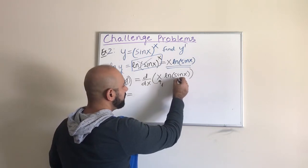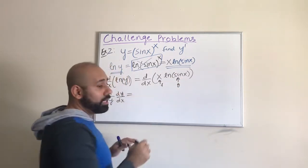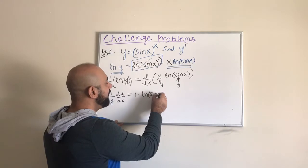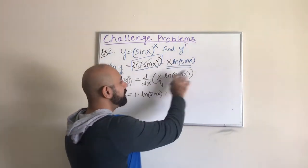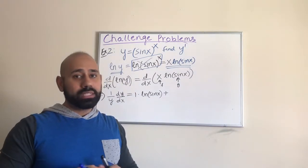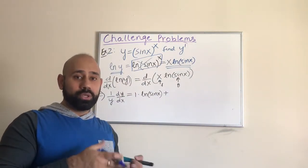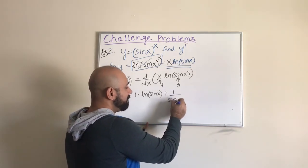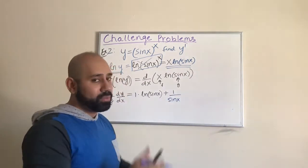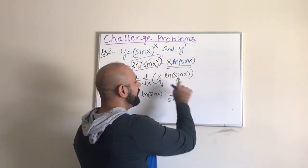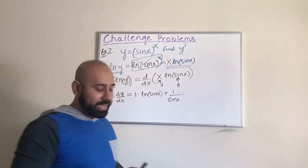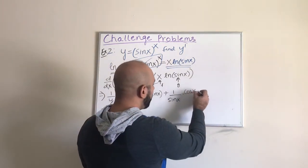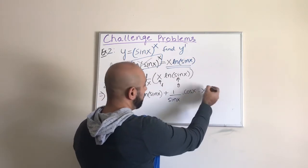On the right-hand side, we treat x as function f and ln(sin(x)) as function g, and apply the product rule. The derivative of f is just 1, so we get ln(sin(x)), plus x times the derivative of ln(sin(x)). Taking the derivative of ln(sin(x)) using the chain rule: the derivative of ln is 1 over the inner function, giving 1 over sin(x), multiplied by the derivative of sin(x), which is cos(x). Then we still multiply by x from the product rule.